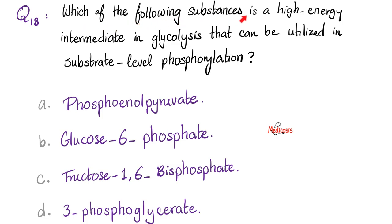Next, which of the following substances is a high-energy intermediate in glycolysis that can be utilized in substrate-level phosphorylation? Pause and try to answer this. Let me first remind you that there is a big difference between substrate-level phosphorylation and oxidative phosphorylation. Substrate-level phosphorylation takes place in the cytosol, but oxidative phosphorylation happens in the mitochondrion. There are more differences between the two. Please refer back to my videos on glycolysis to learn more.